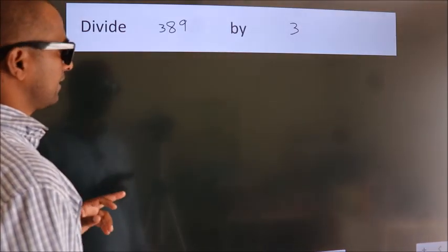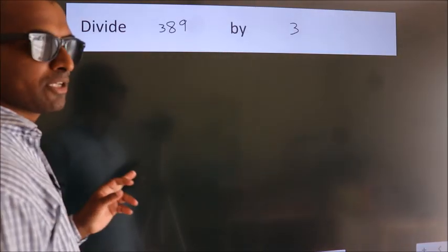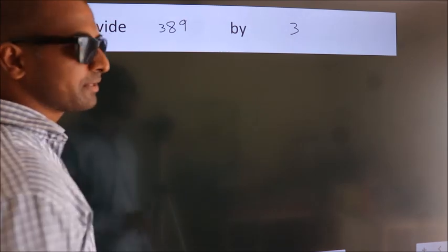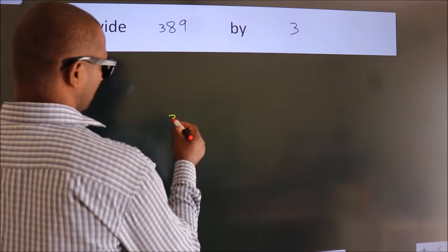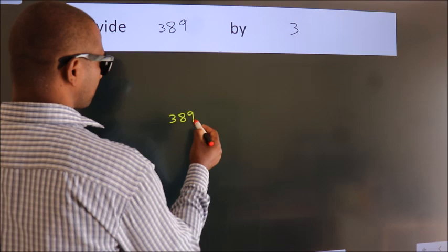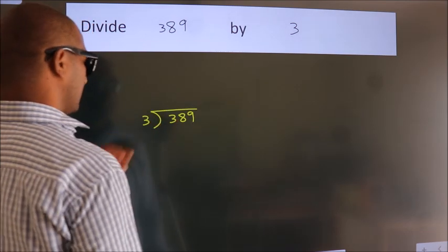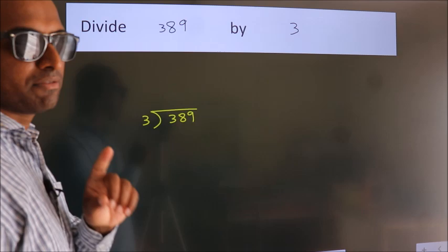Divide 389 by 3. To do this division, we should frame it in this way: 389 here, 3 here. This is your step 1.